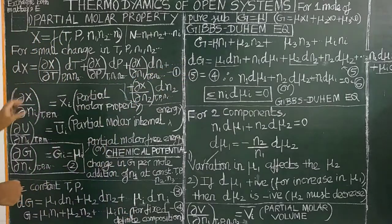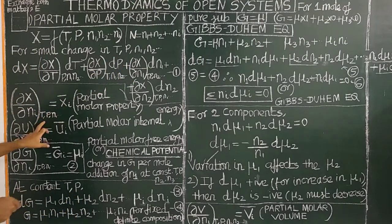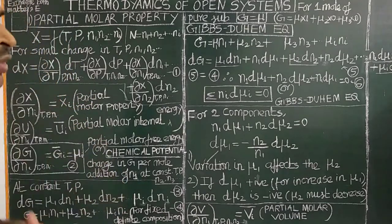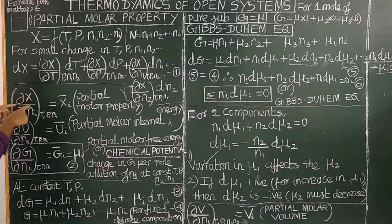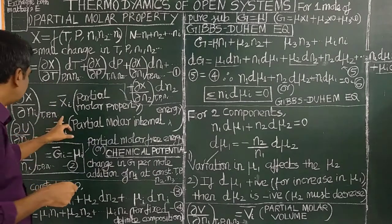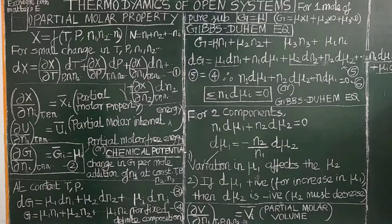This property — for example (∂X/∂Ni) at constant temperature, pressure, and all other mole numbers N1, N2, N3 — is equal to Xi. This is called the Partial Molar Property.